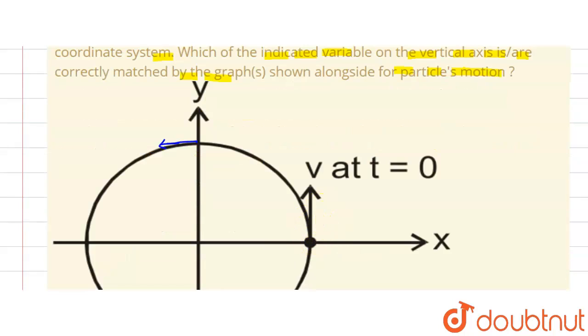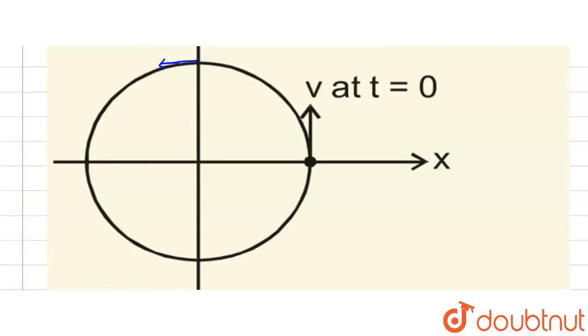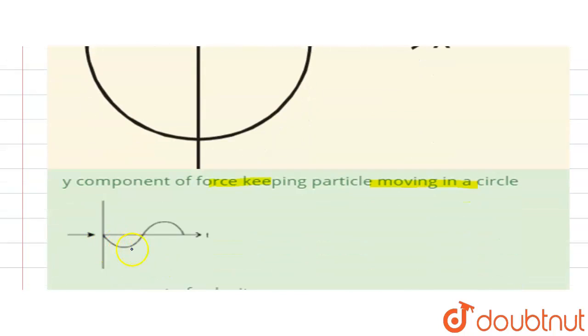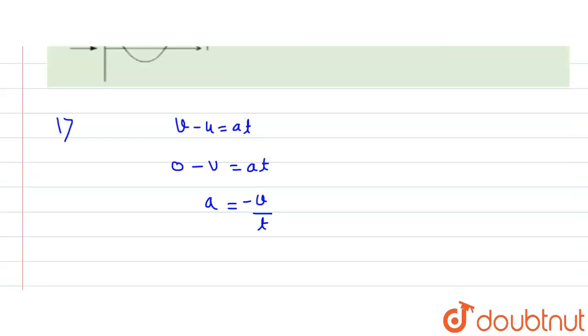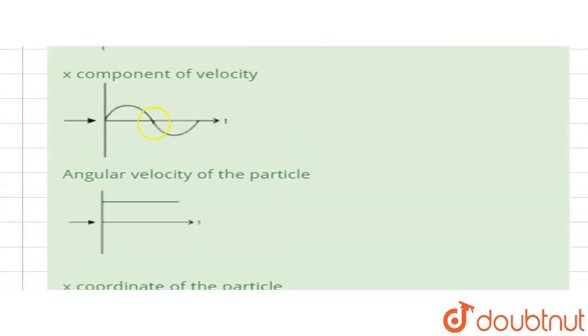upward, so we get a negative acceleration. Now we check the graph. So here in the graph we get negative, so that means this is right. Now we check this second graph: x component of velocity. So here we